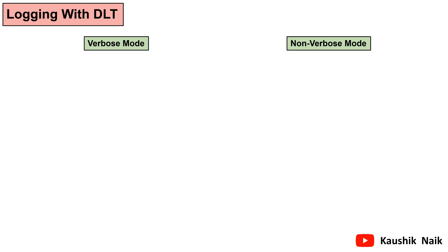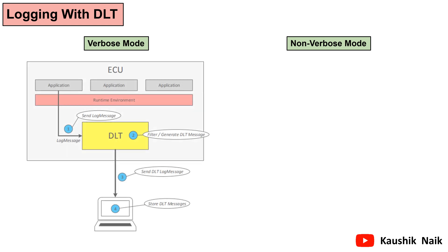Now let's see the two different types of logging modes available. One is verbose mode and another is called non-verbose mode. In verbose mode, the logging method works as follows: an application or software component generates a log message. This log message is then sent to the DLT module which implements the DLT protocol. The DLT module includes all the header information to the log message, sends it to the communication bus, and an external DLT client records the log message.